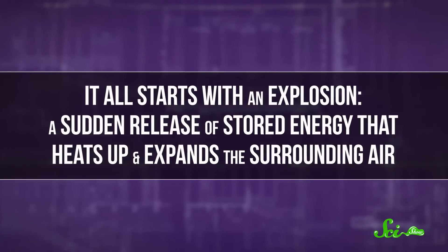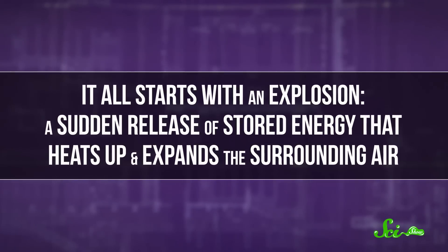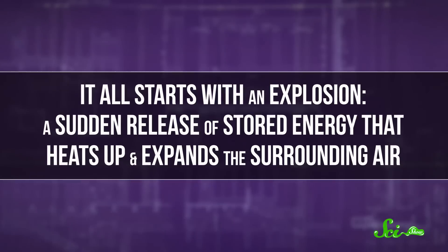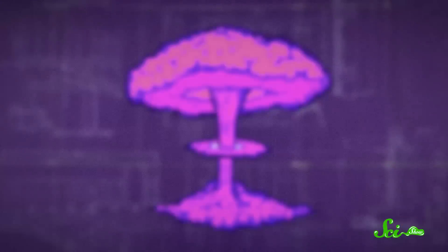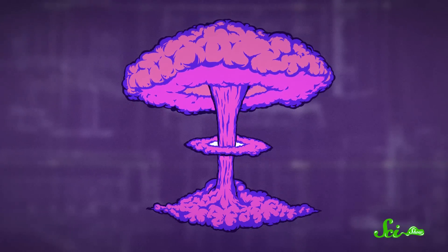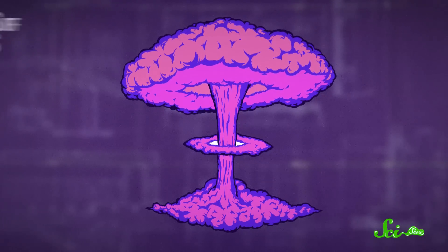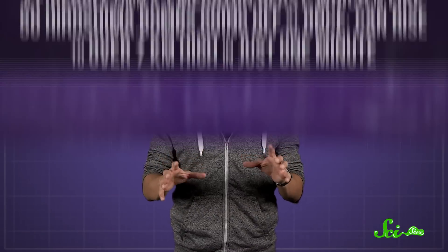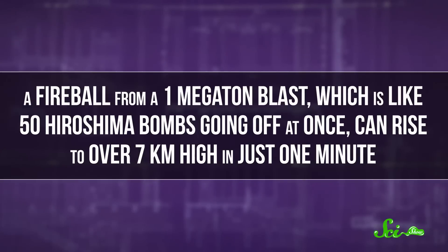It all starts with an explosion — a sudden release of stored energy that heats up and expands the surrounding air. The gas ignites, creating a giant fireball that can hit temperatures similar to what you'd find at the center of the sun, millions of degrees Celsius. Hot air rises, and fireballs rise fast. A fireball from a one-megaton blast, which is like 50 Hiroshima bombs going off at once, can rise to over 7 kilometers high in just one minute.